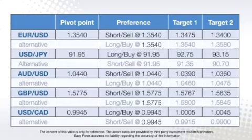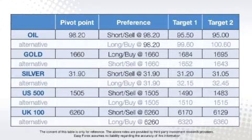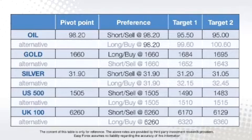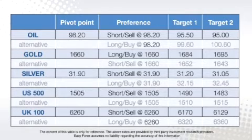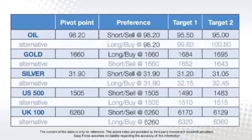And the dollar cap pivot points at 0.9945 with a preference to enter into long positions at 0.9945. Looking at commodities and indices, the oil pivot points at 98.20 with a preference to enter in short positions at 98.20. The gold pivot points at 1,660 with a preference to enter into long positions at 1,660. The silver pivot points at 3.190 with a preference to enter in short positions at 1.90. The US 500 is at 1,505 with a preference to enter in short positions at 1,505. And the UK 100 is at 6,260 with a preference to enter in short positions at 6,260.